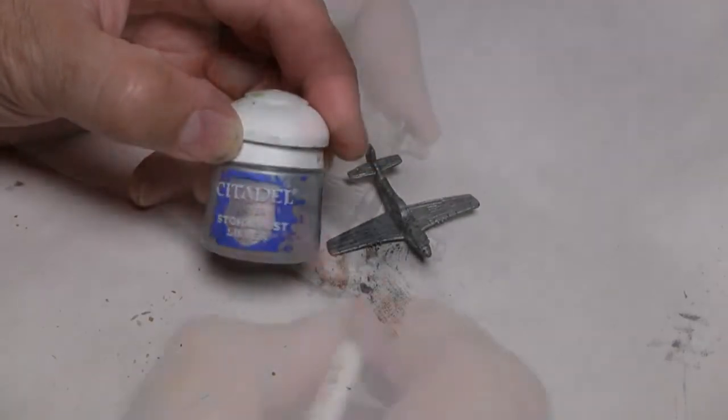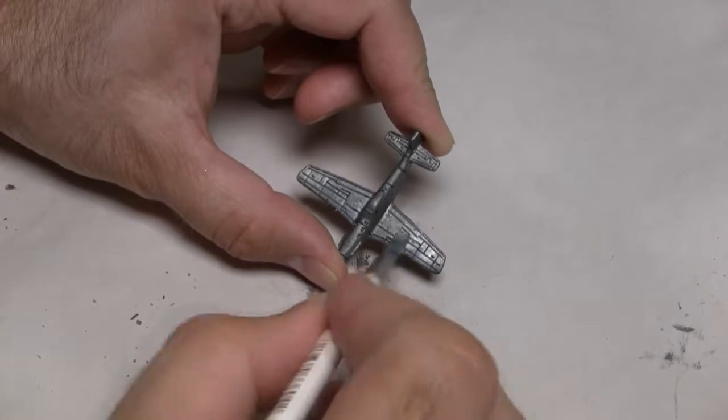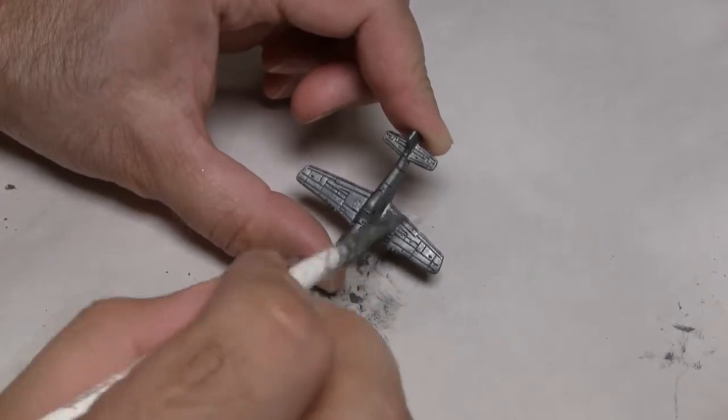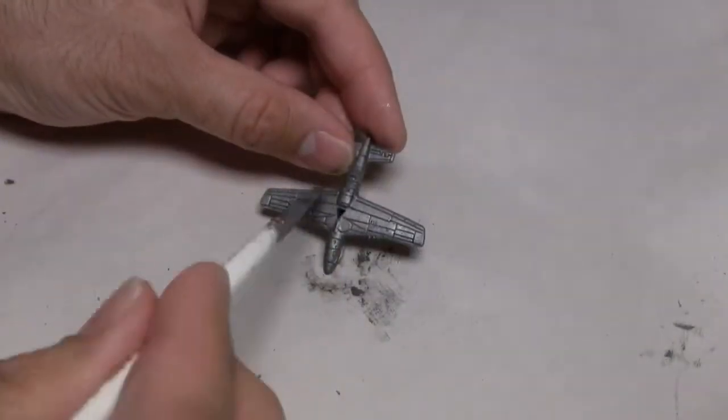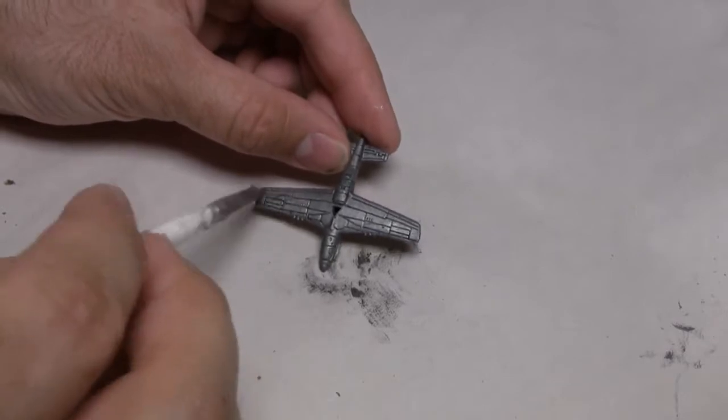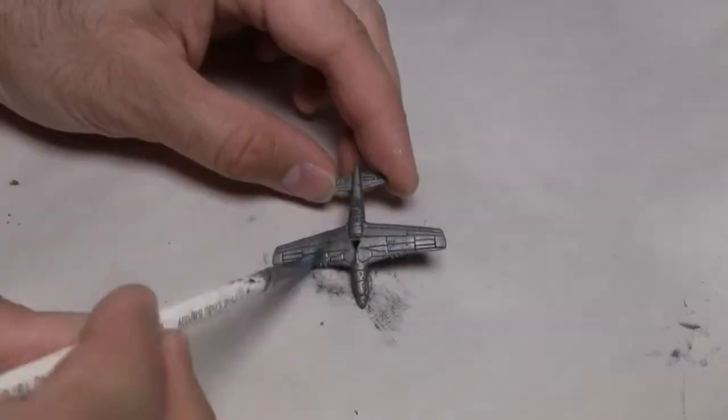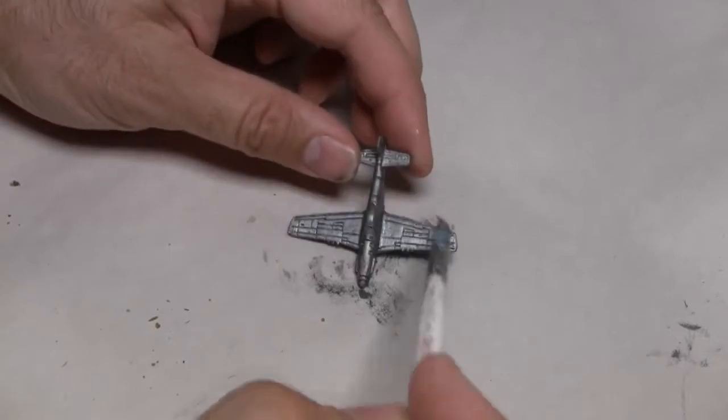And for that, I'm going to be dry brushing on some Storm Host Silver. This is a very bright color from Games Workshop Citadel line of paints. And when it comes to applying this even brighter color, you can apply as much or as little as you want to get the desired shine effect.